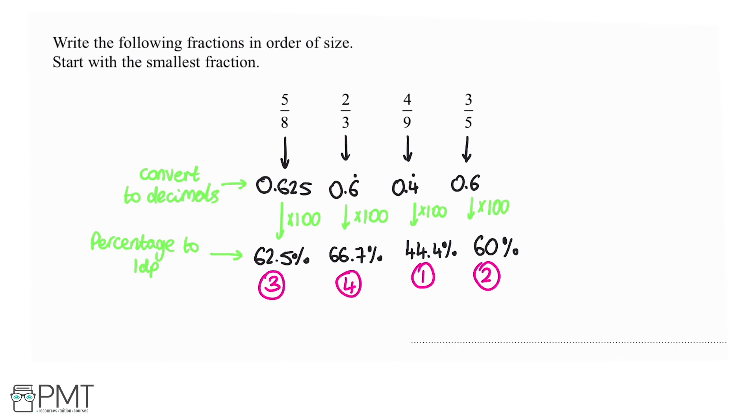So I'm going to write it in that order, but referring to the fractions up here. So we'll have 4 over 9, 3 over 5, 5 over 8, and 2 out of 3.